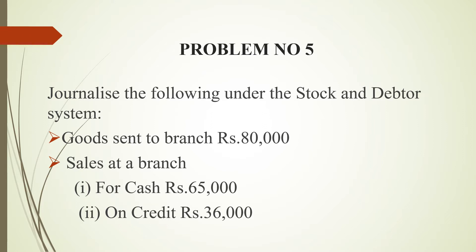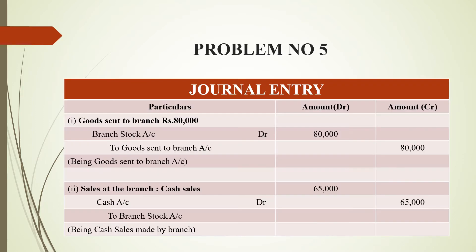Let's see what journal entry has to be given for each transaction. First transaction: goods sent to branch rupees 80,000. From head office to branch, branch stock account will be debited as goods are coming in. Goods sent to branch account will be credited as goods are going out from head office. Narration: goods sent to branch account.